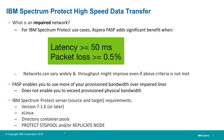FASP works with Spectrum Protect version 7.1.6. It works with your Protect Storage Pool and Replicate Node commands. Both your source and your target server need to be x-Linux at version 7.1.6 or later, and it works with directory container pools.